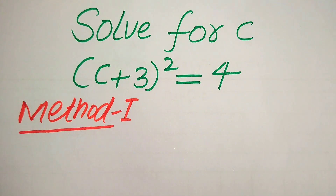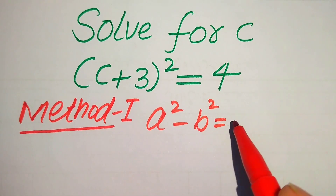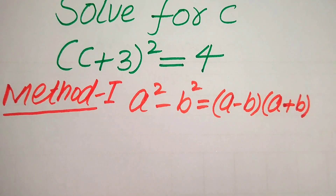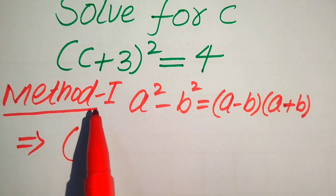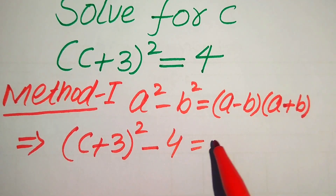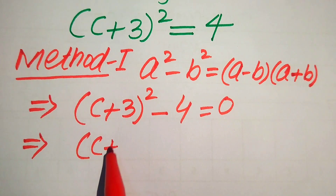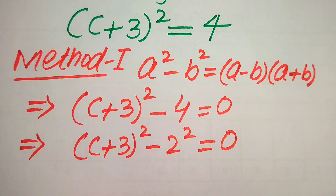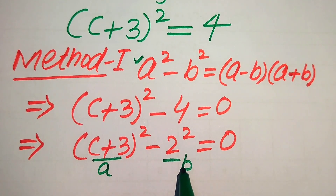In the first method, we use a nice algebraic formula: a² - b² = (a - b)(a + b). According to this formula, we first rewrite our equation in this form. We move the 4 to the left-hand side, so it becomes (c + 3)² - 4 = 0. We rewrite 4 as 2², giving us (c + 3)² - 2² = 0. Here, the base of the first term is our a and the base of the second term is our b.